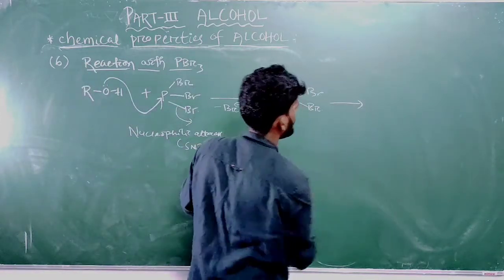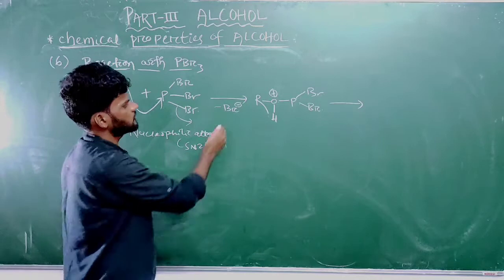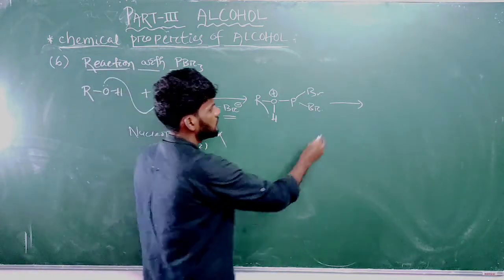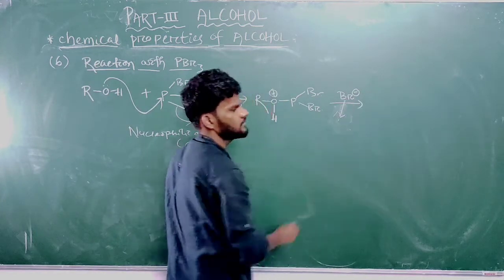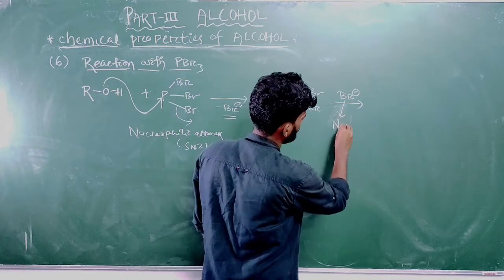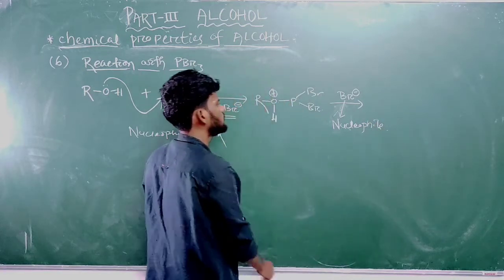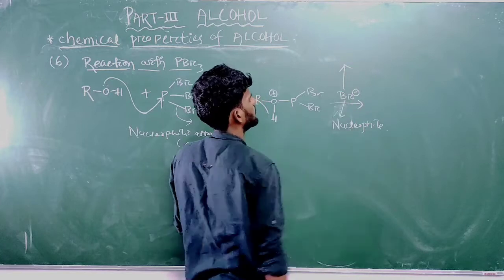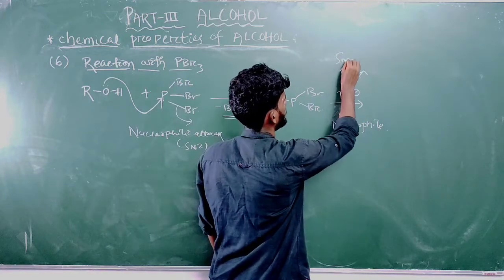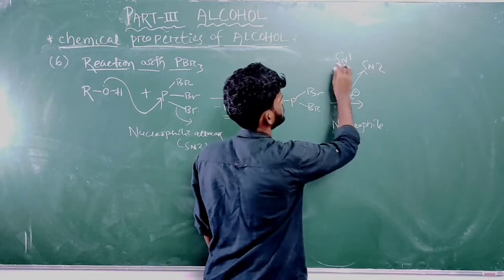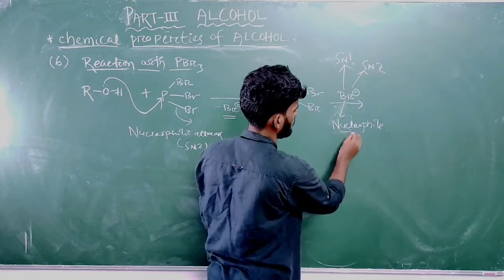In the next step, what do we have in solution? We have Br⁻ ion. Br⁻ can behave as a base or a nucleophile — here it behaves as a nucleophile. If Br⁻ is a nucleophile, then the possible reactions are either SN1 (substitution nucleophilic unimolecular) or SN2 (substitution nucleophilic bimolecular).